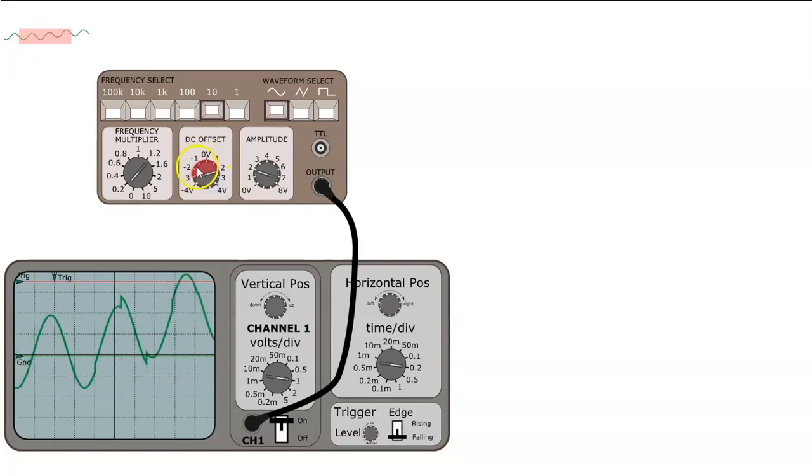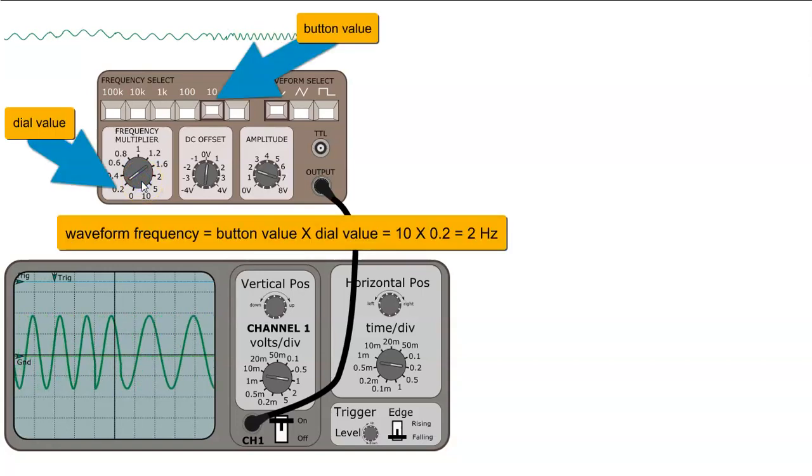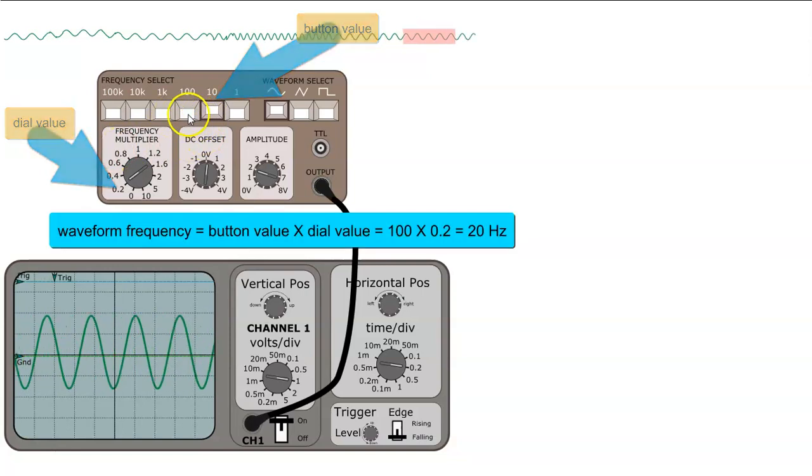We have control over the DC offset as well as fine-tuned control of the frequency using this dial. If you want more significant changes in frequency you can use one of these buttons.